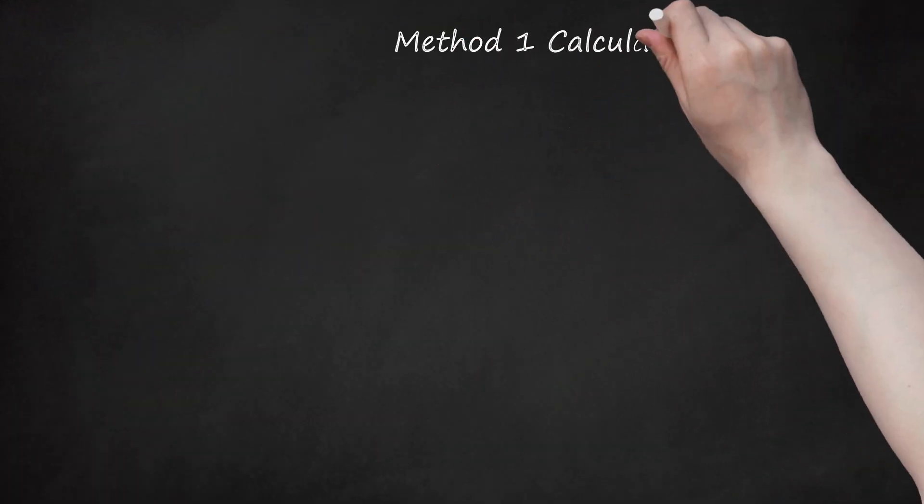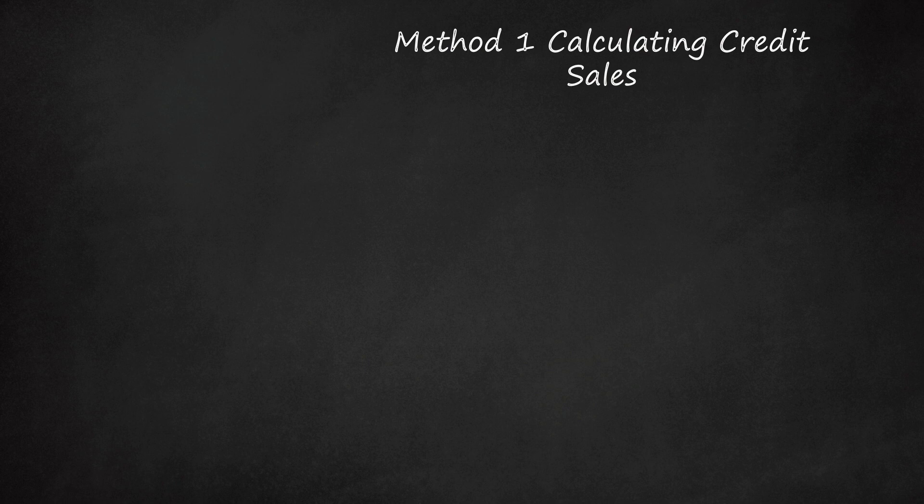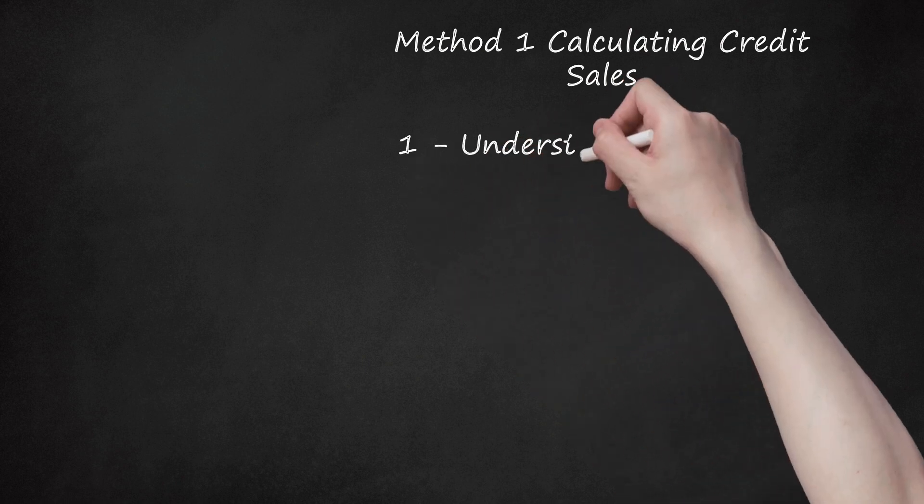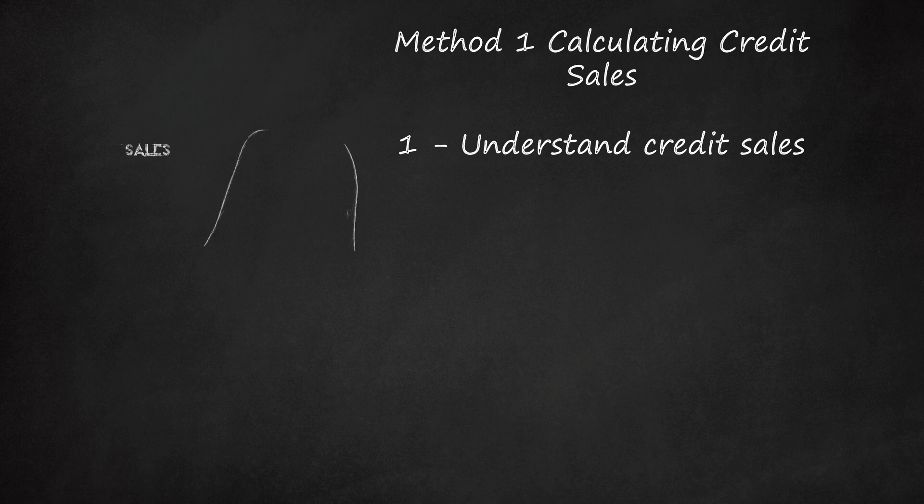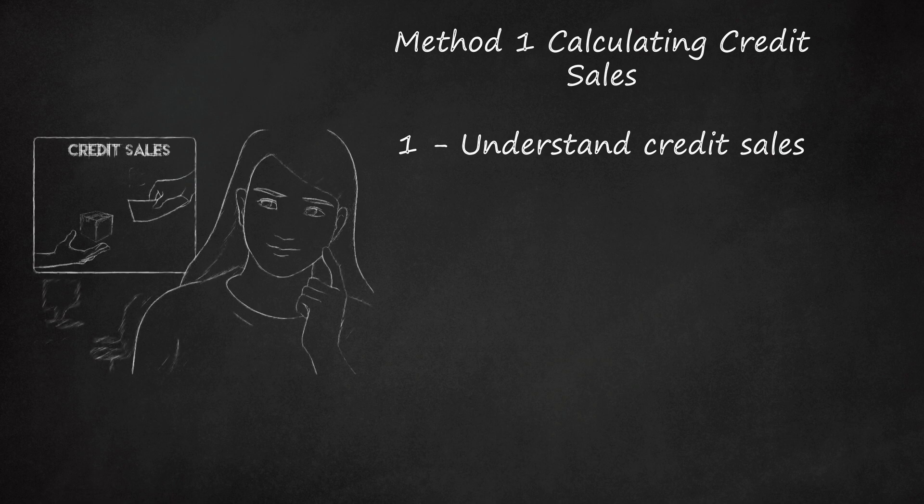Method 1: Calculating Credit Sales. Understand credit sales. Credit sales are distinct from cash sales in that the customer is not required to make a full payment on the date of sale. Instead, they purchase their order on account and are allowed a set amount of time in which to make payments. From a business perspective, this transaction is recorded as revenue even though payment has not been received.